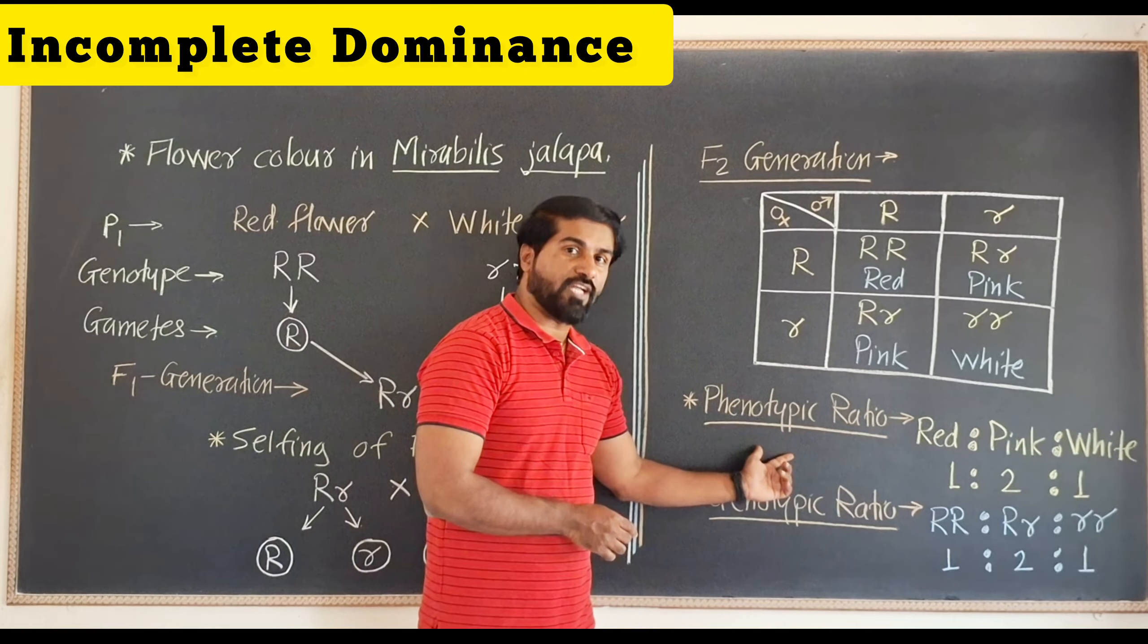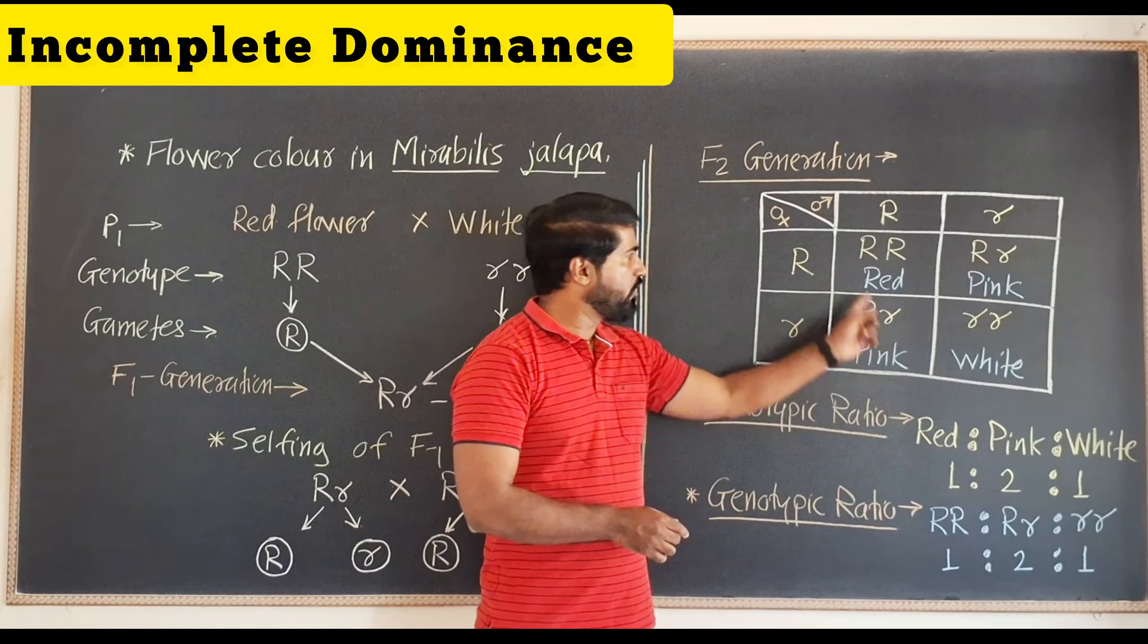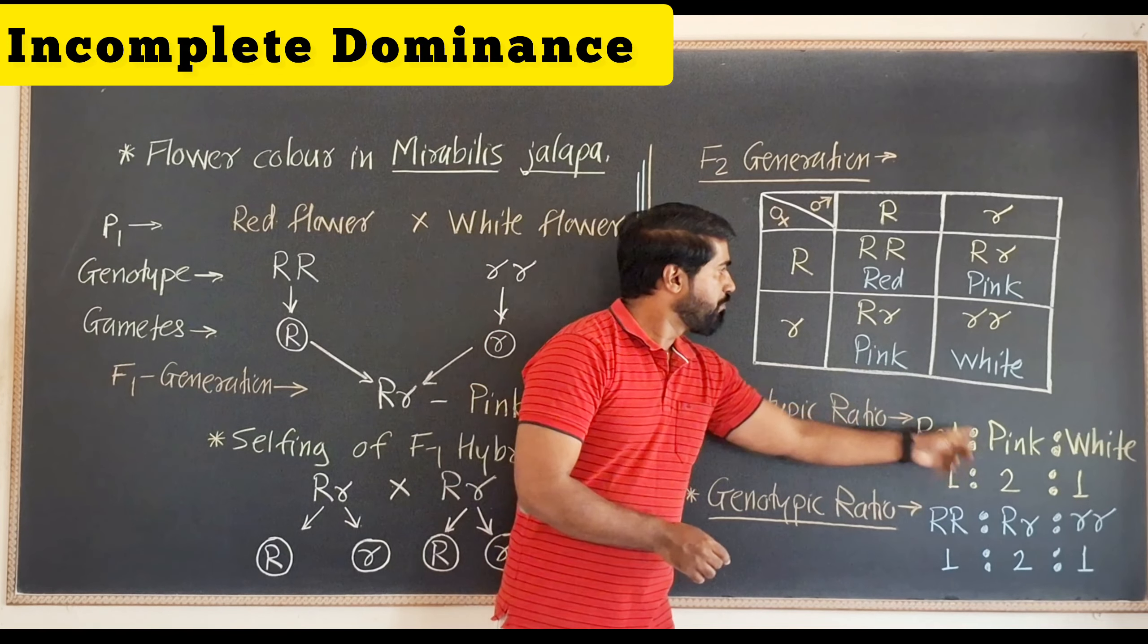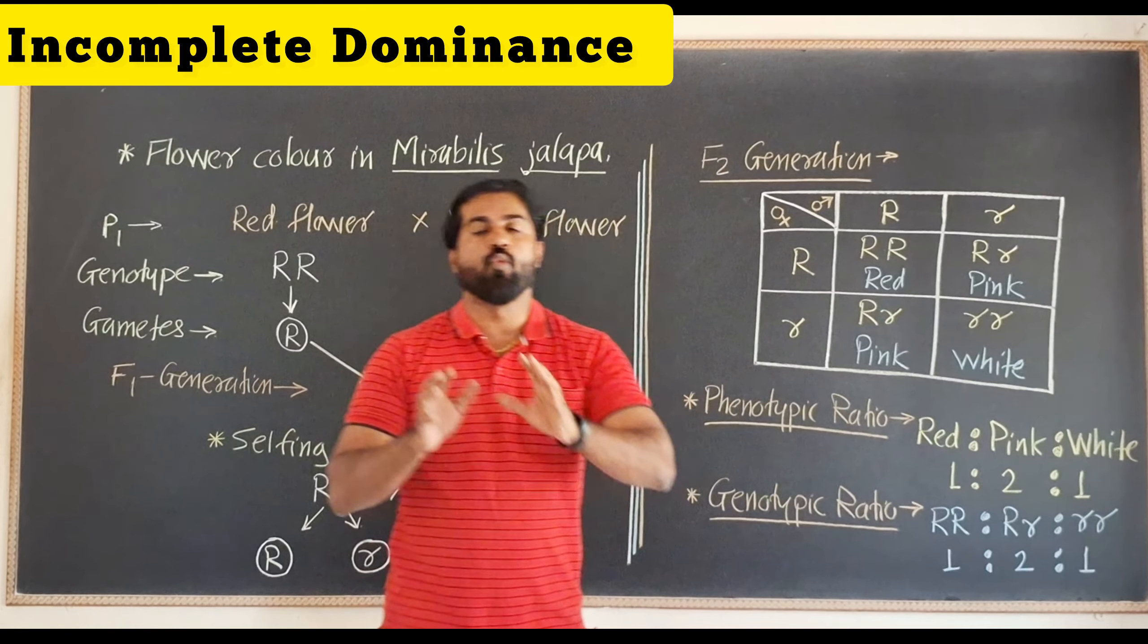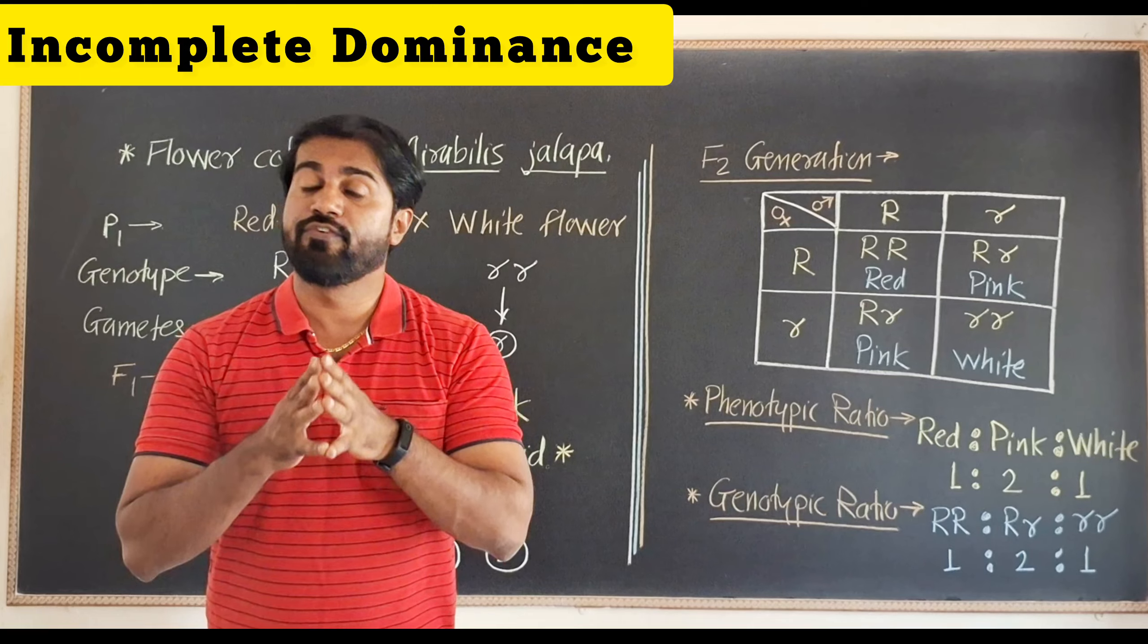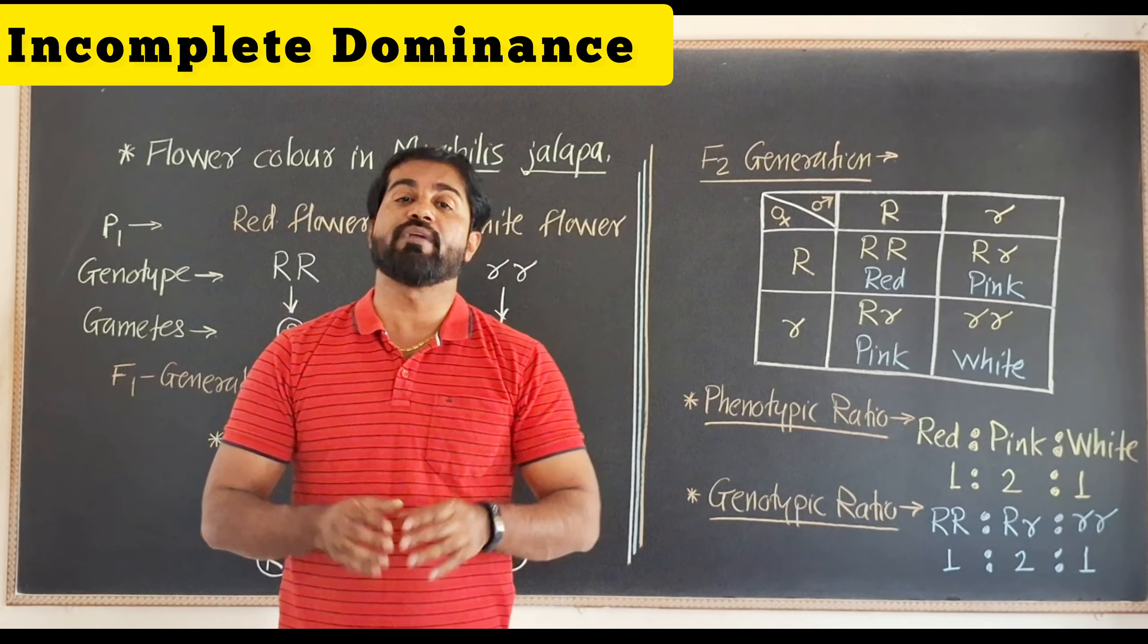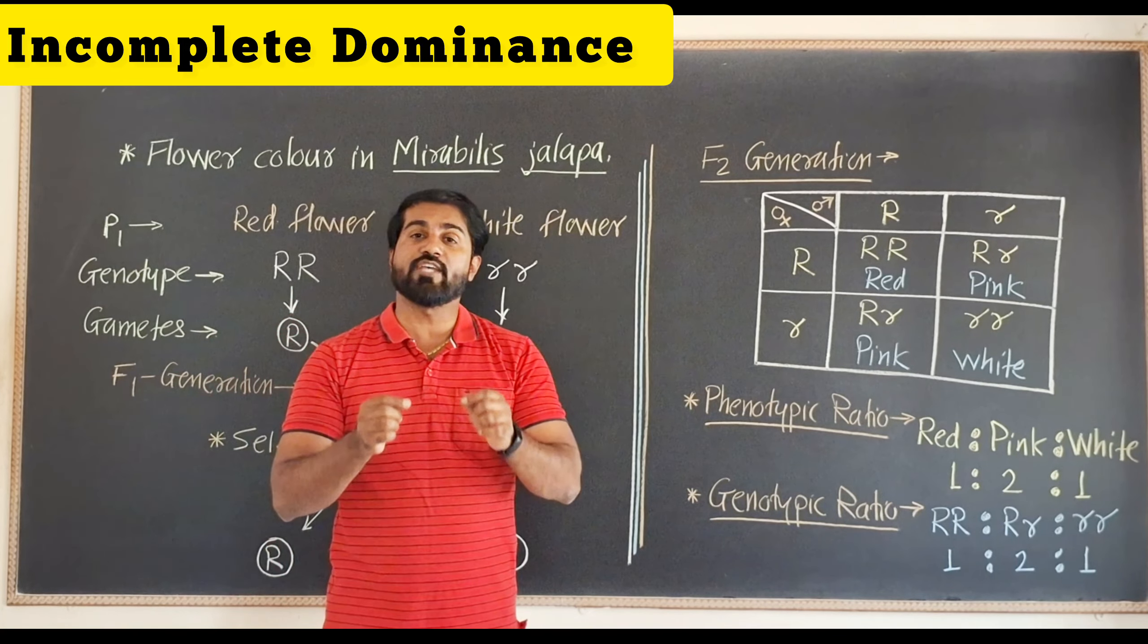If we observe the phenotypic ratio, red will be only 1, pink will be 2, and white will be 1. That means the phenotypic ratio for incomplete dominance is 1:2:1.